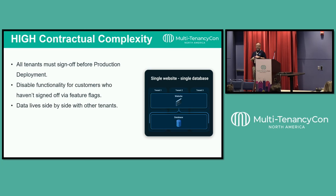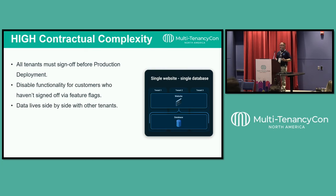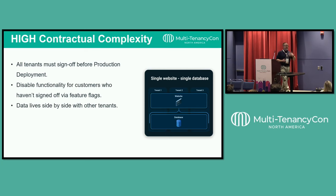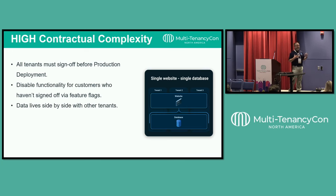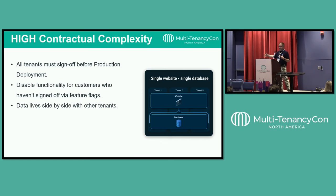Contractual complexity was a funny one I didn't realize mattered. I was all about automation and deploying faster, but we couldn't do that because we had to have customers sign off on all changes. If the slowest customer took two weeks to approve every last thing, that held everything back. We started adding feature flags to disable functionality until they signed off, which just added more complexity. On top of that, data living side-by-side with other customers is really hard to get approval for when companies start talking about data sovereignty laws — imagine PepsiCo and Coca-Cola in the same database.